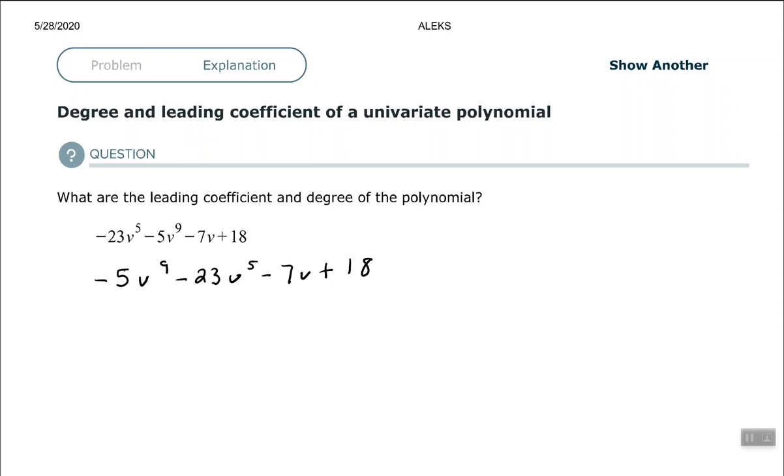Okay, so now we have that written in descending variable order. I can quickly identify my degree and leading coefficient. So my degree is the exponent on the leading coefficient, so it's 9 again. And then my leading coefficient is that number that's been multiplied times the variable, or negative 5.